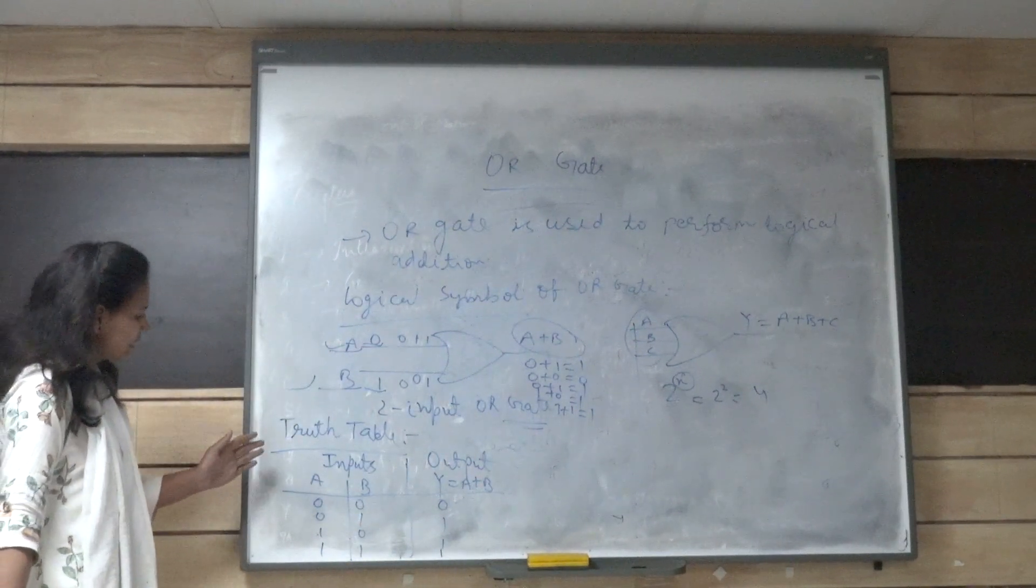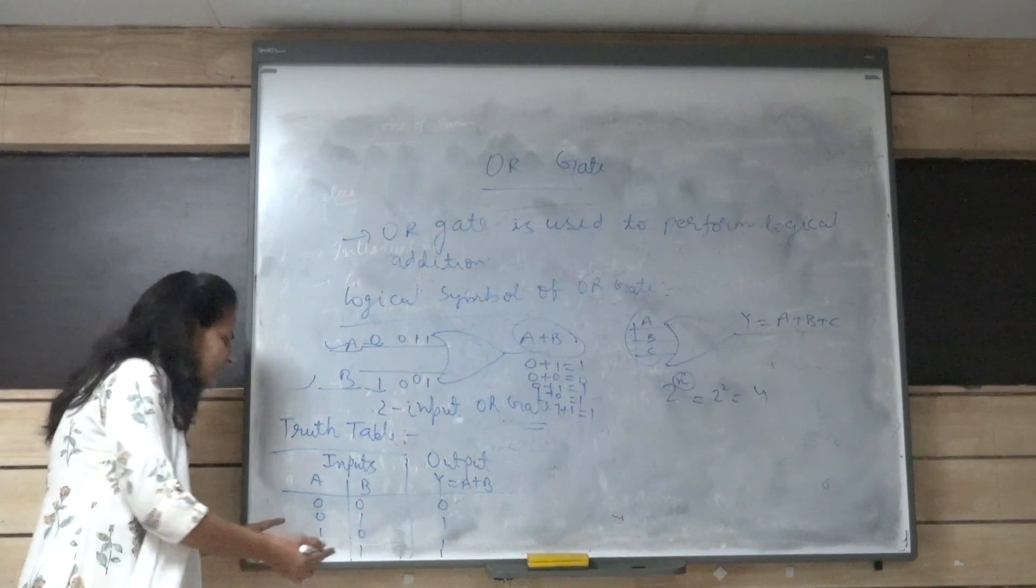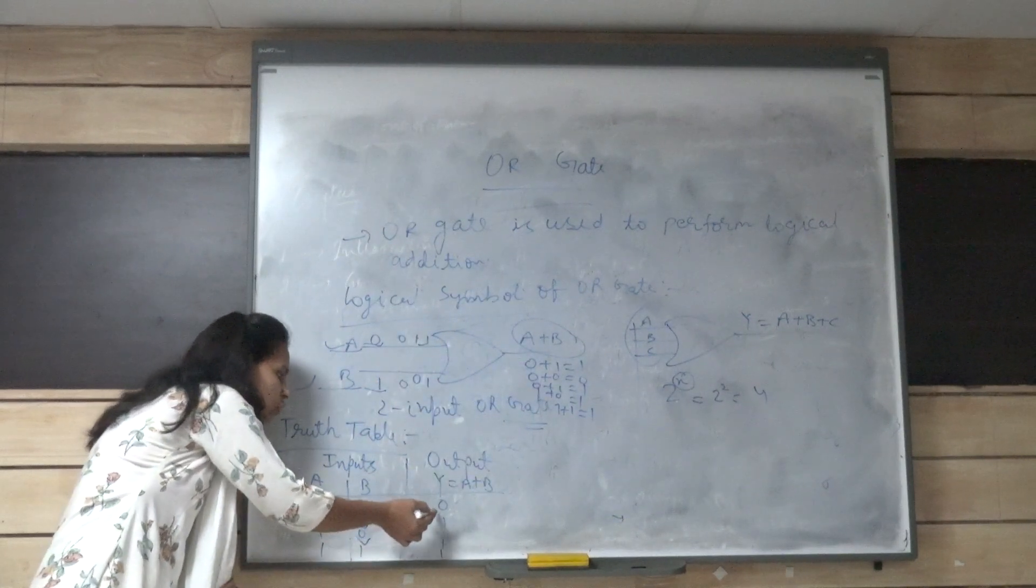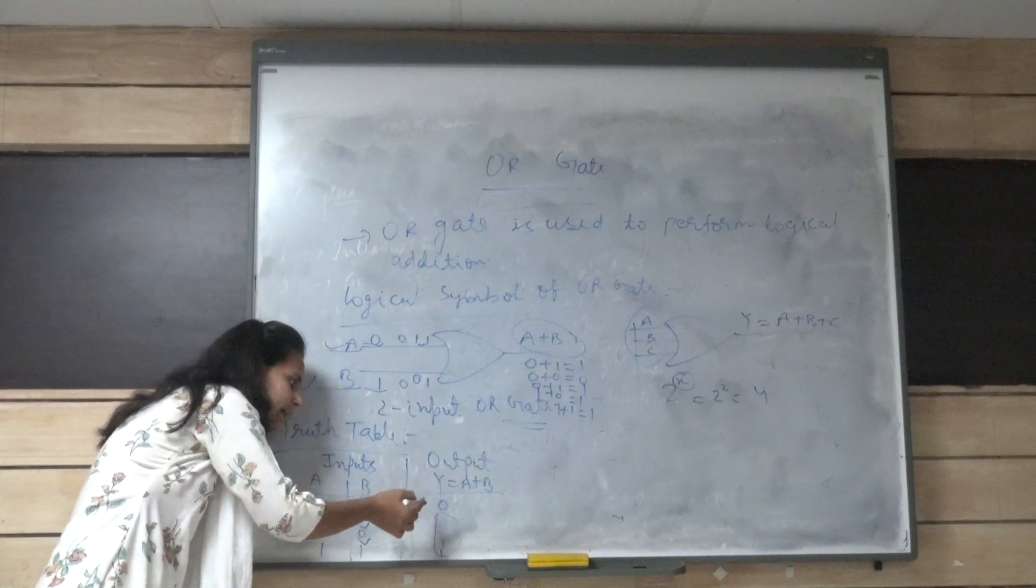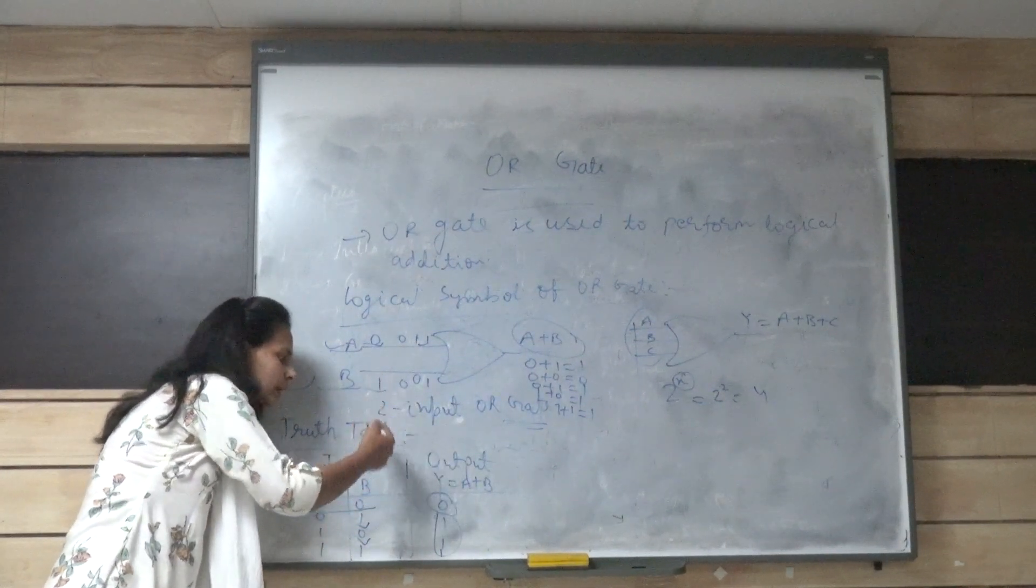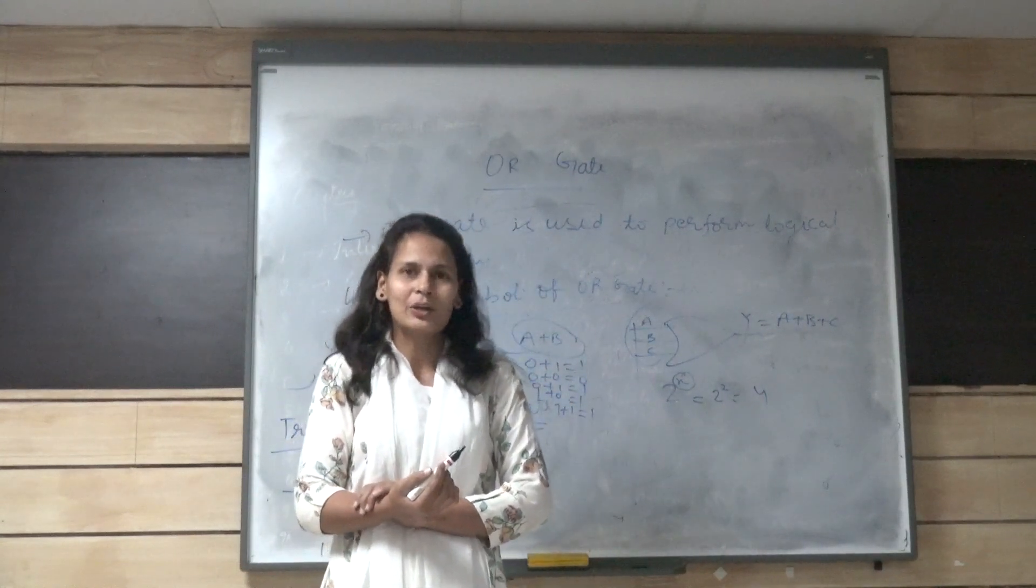So you can see from the truth table that when only one input is high in the OR gate input, then the output of the OR gate will be high. When both inputs are low, then the output of the OR gate will be low. So I hope you are satisfied with my session today. Thank you.